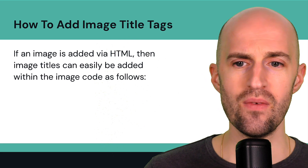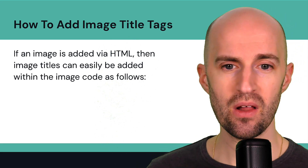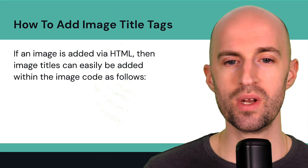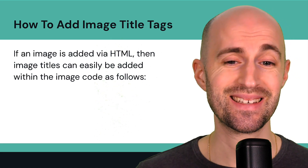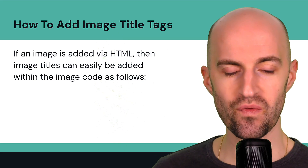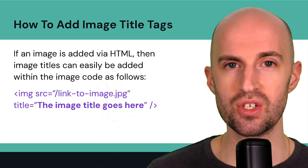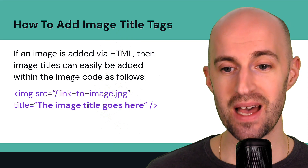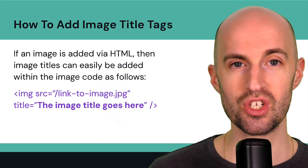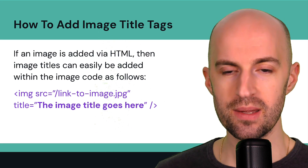Now, if you add an image directly using HTML — let's say in a custom site or if you coded it — then the image title tags can easily be added within the image code as follows. You can see here the image snippet and the title attribute, and you can type in the image title text right there, which is bolded.